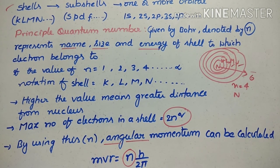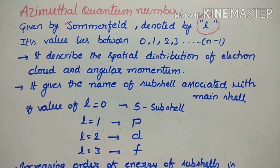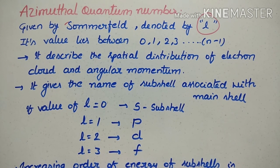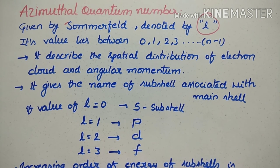The next quantum number is the azimuthal quantum number, given by Sommerfeld and denoted by small 'l'. Its value lies between 0, 1, 2, 3, up to n minus 1. It describes the spatial distribution of the electron cloud and the angular momentum of the electron in a subshell.